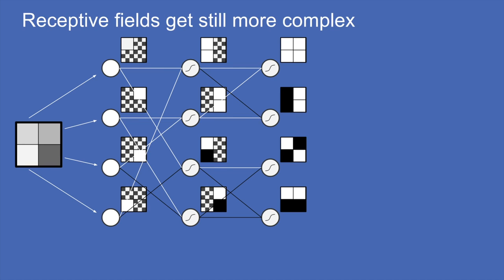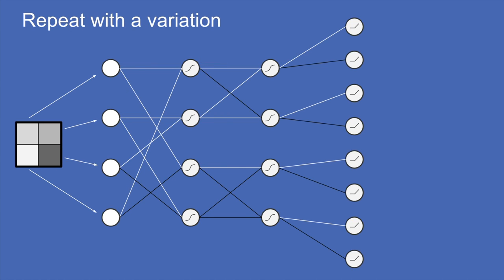Each time, the receptive fields get even more complex — you can see they now cover all of the pixels in more and more special arrangements of black and white. We can create another layer; all neurons in one layer are connected to all neurons in the previous layer, though we're assuming here that most of those weights are zero and not shown, which is not generally the case.